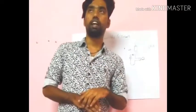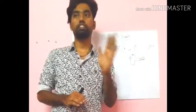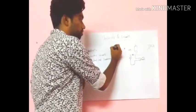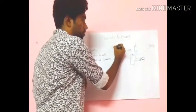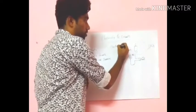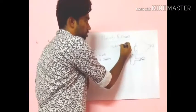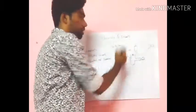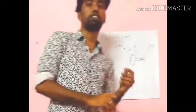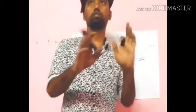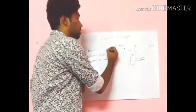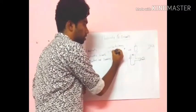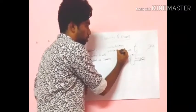This is electricity, and here is the explanation of what electricity is. Electricity is nothing but the flow of charges. The flow of charges - that's electricity. What is the charge? Charge means the flow of electrons.